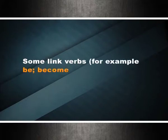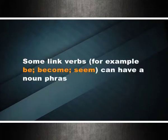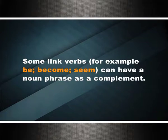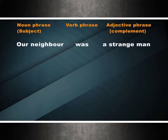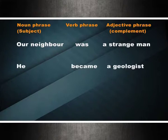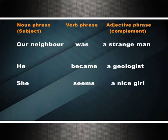Some link verbs — such as 'be,' 'become,' and 'seem' — can have a noun phrase as a complement. The pattern is N + V + N. Examples: our neighbor was a strange man; he became a geologist; she seems a nice girl.